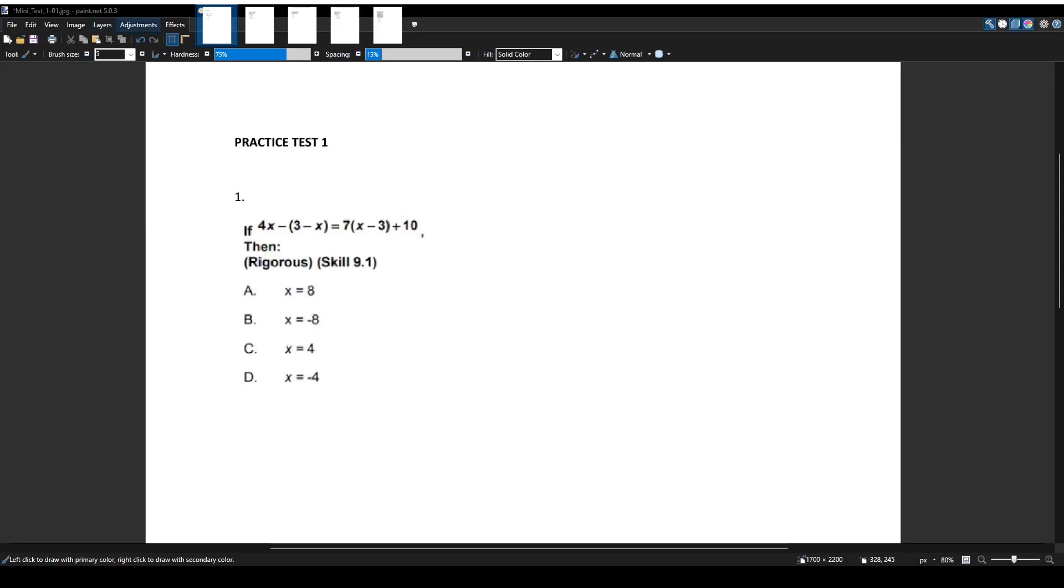All right, let's try out these practice problems for the math multi-subject CST exam for teacher certification. So we have an equation here, and our goal is to see what the value of x is. So the first thing I'm going to do is rewrite the problem. So 4x minus 3 minus x, wrapped in parentheses, is equal to 7 times x minus 3 plus 10.